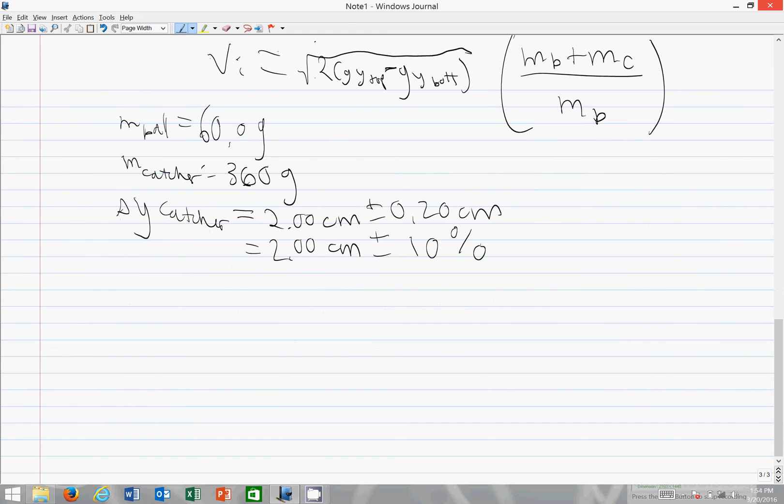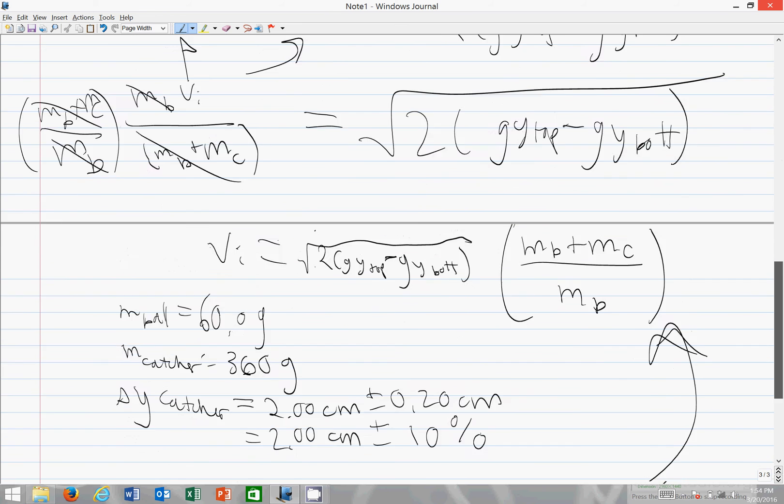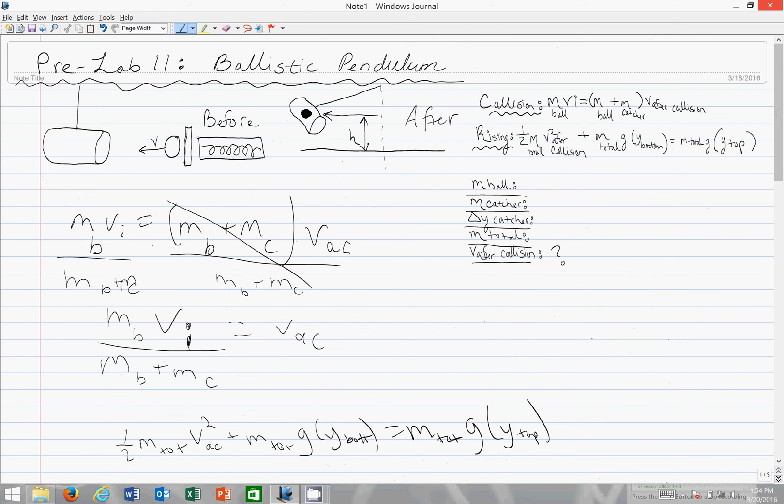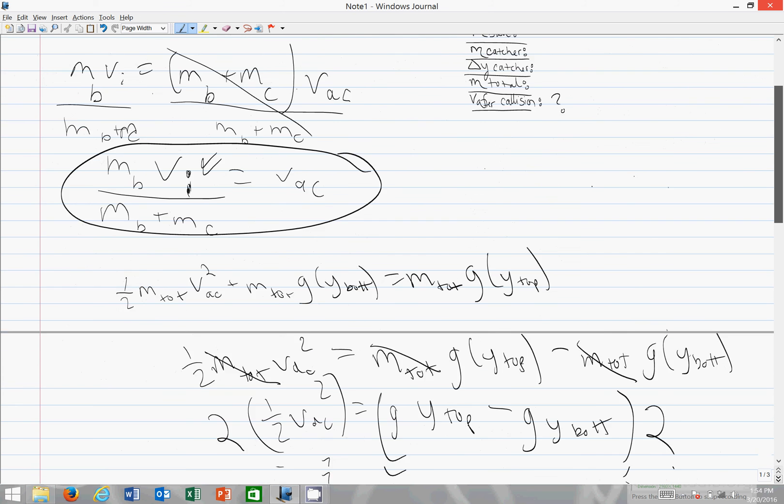So given these pieces of information you're asked to find the initial speed of the ball, which you have that equation. It's written up here. You're asked to find v after collision, and that you may remember we have from up here. This equation gives you v after collision once you know v initial.